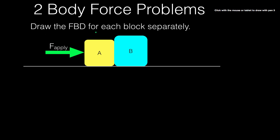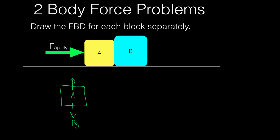It says to draw the free body diagram for each block separately. So we have block A and block B, and we'll draw them separately down here. For block A, we know it's sitting on the ground, so we're going to have the force of gravity. It's not accelerating in the up and down direction, so there must be a normal force that the ground is putting on the block, pointing straight up. There's also a force applied pointing to the right, so I'm going to draw that force and call it force applied.